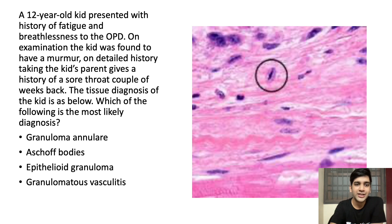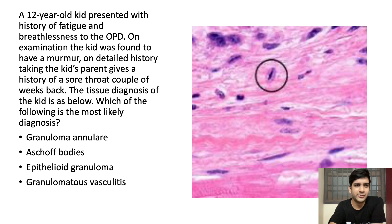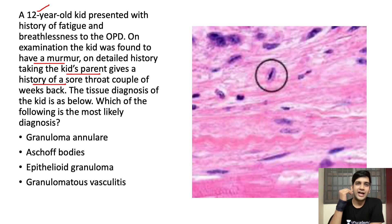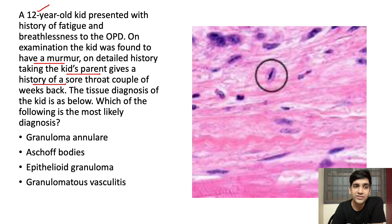Let's go back to the question. The question has information which can easily lead you to rheumatic heart disease, even if you do not know the image. A 12-year-old kid with history of fatigue and breathlessness came to the OPD, found to have a murmur. The kid's parents gave a history of sore throat a couple of weeks back — a very classical history. Sore throat, then murmur due to carditis, due to molecular mimicry of streptococcus organisms — a classical diagnosis of rheumatic heart disease. The tissue diagnosis is given below. The most likely diagnosis has to be an Aschoff body.